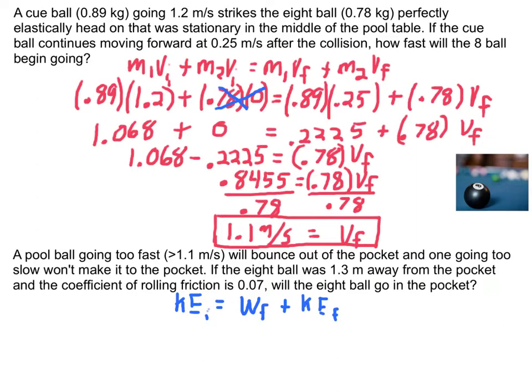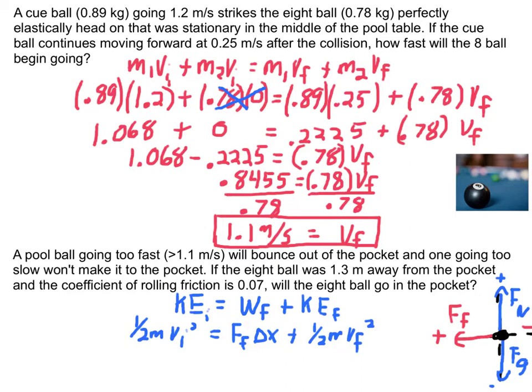So I have now 1 half m v initial squared equals work done by friction breaks down into your force, force of friction times displacement delta x plus the final kinetic energy, 1 half m v final squared. And v final is my end goal here. So I put up a quick free body diagram because I don't know what the force of friction is. So I know I'm going to need to go to Newton's second law for that. And let's work the next line down.